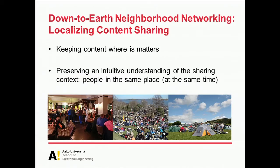Our down-to-earth version of neighborhood networking deliberately constrains our initial ideas to your local proximity, your vicinity, and also to keep content that you might want to share roughly where it matters. We do have lots of cool cloud services on the Internet where our data move halfway around the world to be retrieved — or maybe not retrieved — so we collect a lot of data waste in the Internet, and cause a lot of data to be moved between routers, which costs a lot of energy.